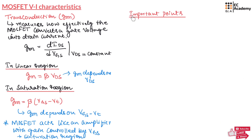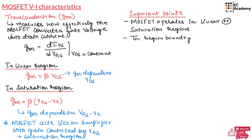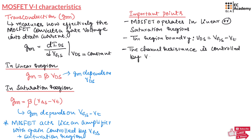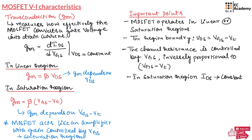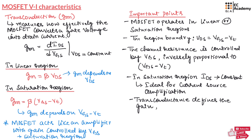Let us review the important points from this lecture. MOSFET operates in linear or saturation region; the boundary between them is at VDS equal to VGS minus VT. The channel resistance is inversely proportional to VGS minus VT. In saturation region, IDS is constant, ideal for current source amplification. The transconductance defines the gain and varies based on the region — linear or saturation. I hope you have understood the topic. Thank you.